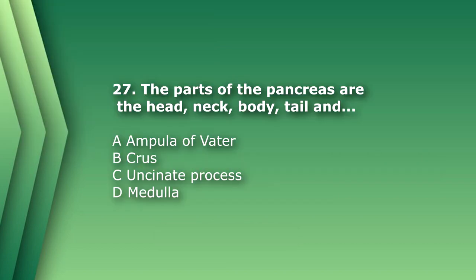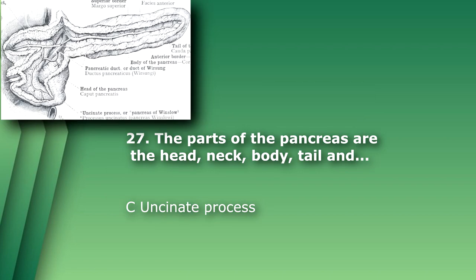Number 27. The parts of the pancreas are the head, neck, body, tail, and: A. Ampulla of Vater. B. Crust. C. Uncinate process. Or D. Medulla. The answer is C, uncinate process. The uncinate process is a tongue-like projection of the head of the pancreas.